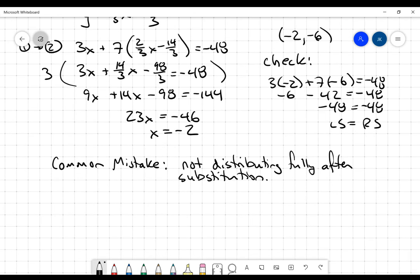So once again, the really common mistake here is simply when you do the substitution, when you replace the variable with the expression it's equal to, to not put parentheses around it and as a result to not distribute that coefficient through. That is the most common mistake.